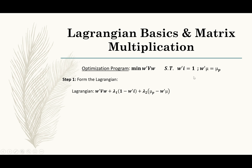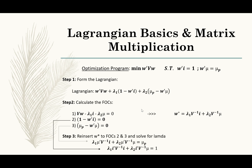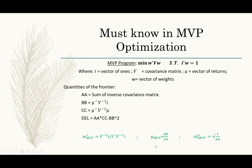The next thing we can do is form the Lagrangian function and take the first order conditions with respect to W and lambda one. Once we solve out these first order conditions and set them equal to zero — don't worry about the third order conditions, they're relevant for a separate portfolio on our frontier — we can solve for the optimal W star, or the optimal vector of weights that minimizes our variance in the portfolio. Skipping some of the mathematics, that ultimately gives us an equation saying that the optimal weight of a minimum variance portfolio is proportional to the inverse of the covariance matrix C.